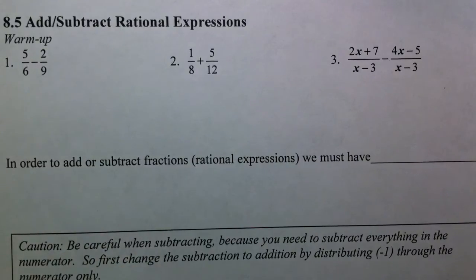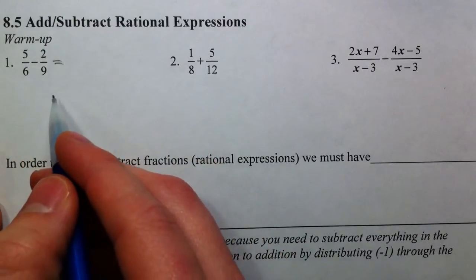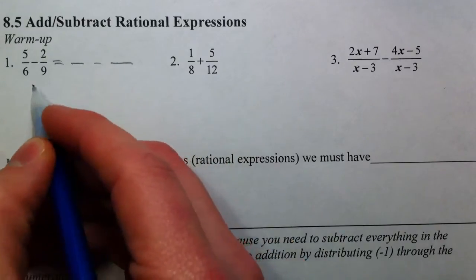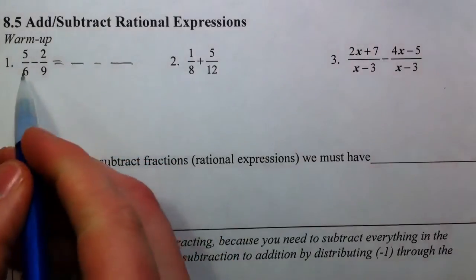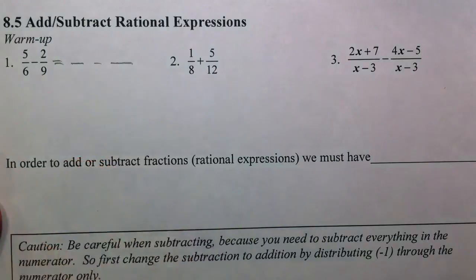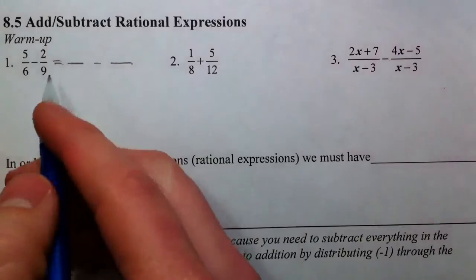Adding and subtracting rational expressions. The last section was a little easier because multiplying and dividing fractions doesn't require common denominators. As a quick warm-up, we'll remember how to subtract fractions. If we have 6 and 9 as denominators, we want to know the lowest common denominator. The easiest way is to multiply the two — 6 times 9 — but we'd have to reduce at the end, and it gets really ugly when x's are involved.